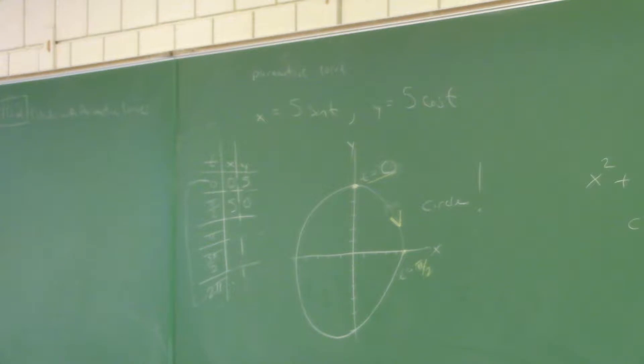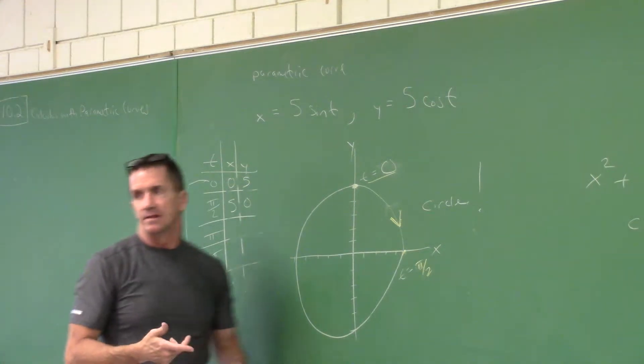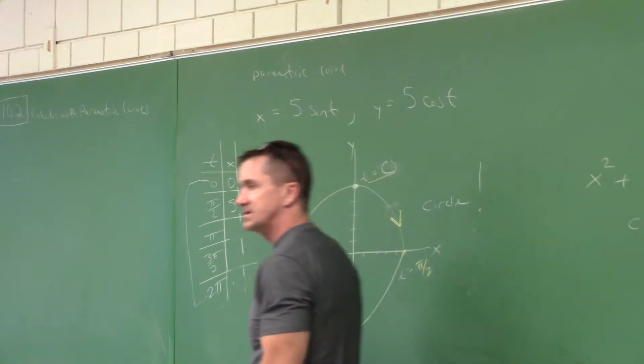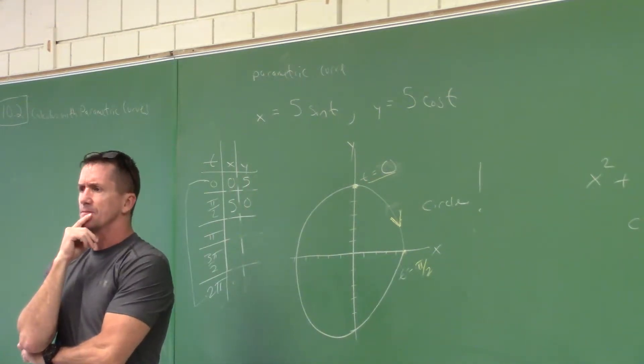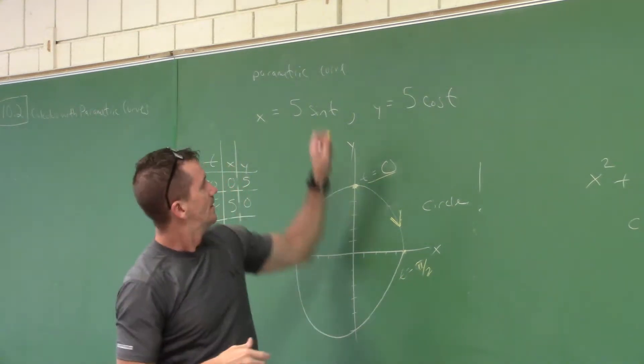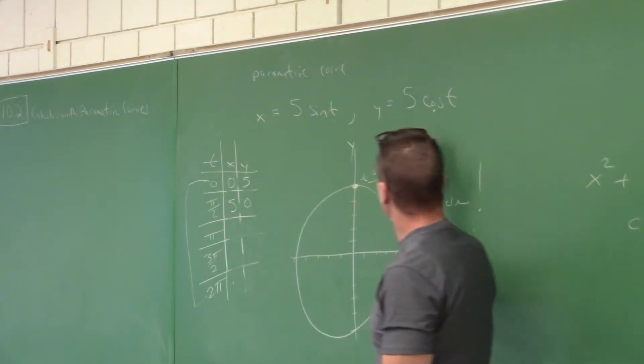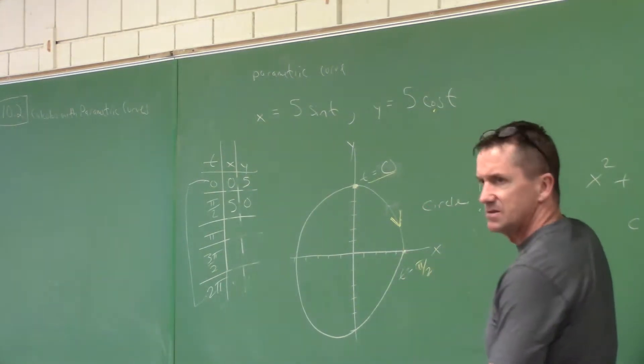There you go. So the only difference here is how it moved in terms of t increasing in the direction. Because you'll be doing something called line integrals. And when it's moving counterclockwise, they call that positive orientation. And you'll sit there and go, well how can I make it have positive orientation? Put the cosine before the sine. You put sine for cosine to go the other way.